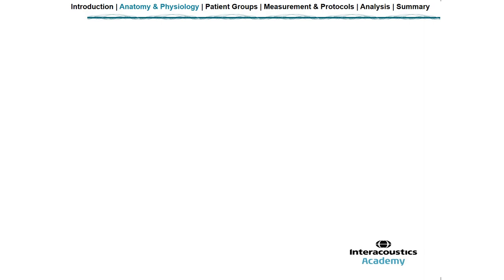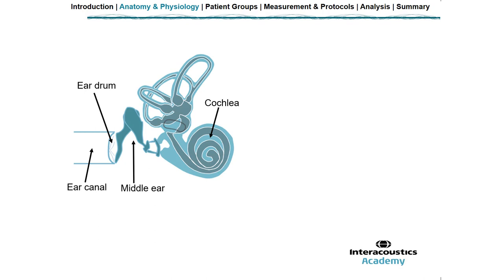Now let's look at some basic anatomy and physiology, and some OAE assumptions. Here is a diagram of the ear. We have the outer ear with the ear canal and the eardrum, the middle ear, and the cochlea. When we present a sound to the ear it travels through the ear canal, middle ear, and eventually reaches the cochlea — this is where the OAEs are generated. OAEs are the sounds generated by the movement of the outer hair cells in a healthy functioning cochlea in response to an external stimulus, and can vary from around minus 10 dB SPL to positive 30 dB SPL.